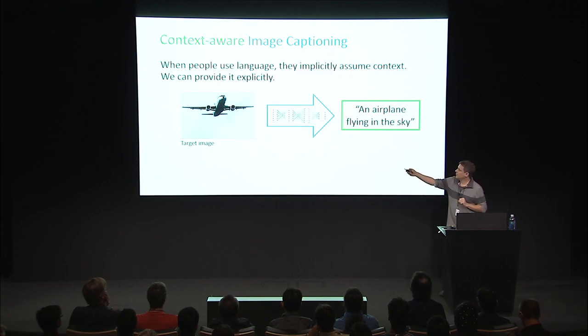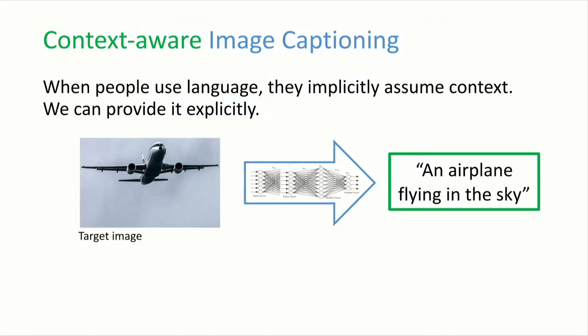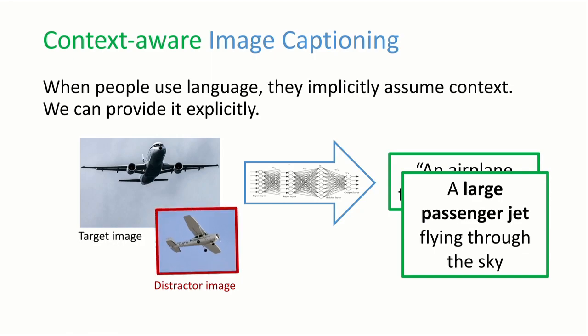If you want to describe the image on the left, you might create a model that maps that image to a sentence like 'an airplane flying in the sky.' But given another image as context, a better description would be the more discriminative 'a large passenger jet flying through the sky,' because that sentence is much more specific to the first image.